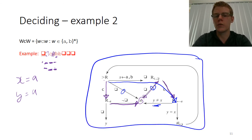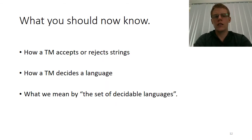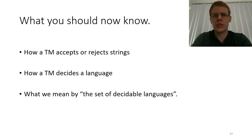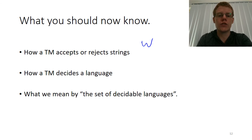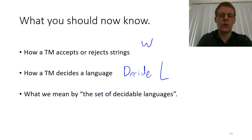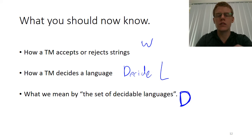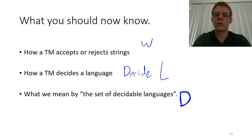What we should have gotten from this video is: our definitions of what it means for a Turing machine to accept or reject a string, what it means for a Turing machine to decide a language, what the set of all decidable languages is and what it means for a language to be decidable, and an idea of how to follow how a Turing machine goes about doing that for specific examples.